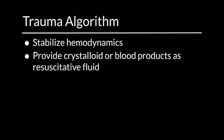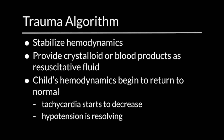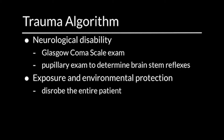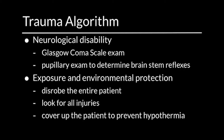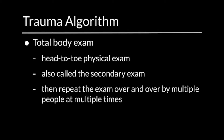We would love to see stabilizing hemodynamics — as we provide crystalloid or blood, the child's hemodynamics begin to return to normal, with tachycardia starting to decrease and hypertension resolving. We want a determination of the child's neurological disability via a Glasgow Coma Scale exam and pupillary exam for brainstem reflexes. Finally, we want effective exposure and environmental protection — disrobing the entire patient, looking for all injuries, and then covering the patient to prevent hypothermia. We then do a total body head-to-toe exam — the secondary exam — and then repeat it again and again. Repeating exams by multiple people at multiple times ensures we do not miss any injuries.